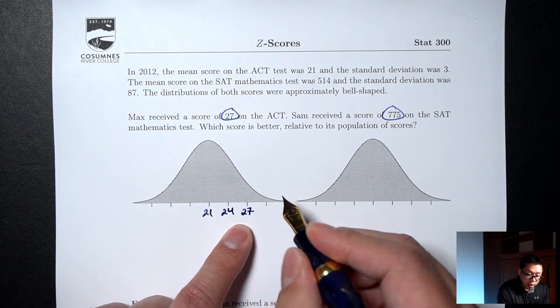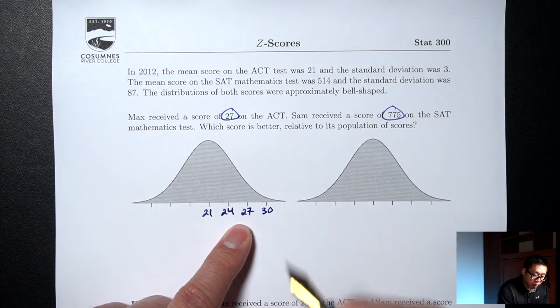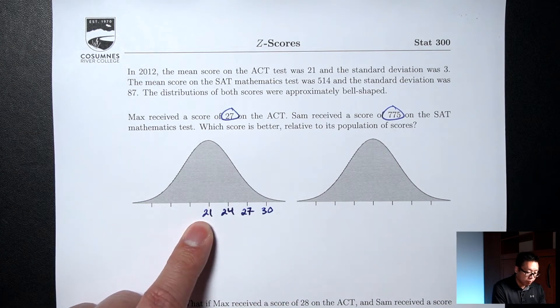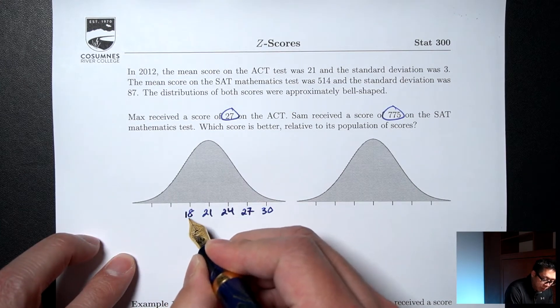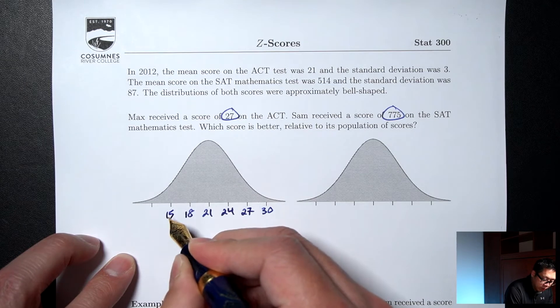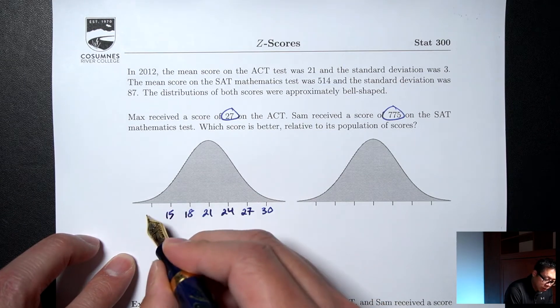Plus 3 again, 27. Plus 3 one more time, 30. Going the other direction, 21 minus the standard deviation, 21 minus 3 is 18. Minus 3 again, 15. Minus 3 one last time, 12.